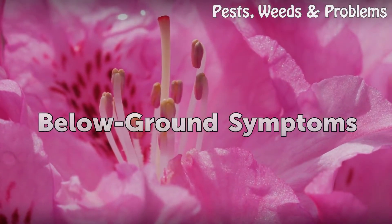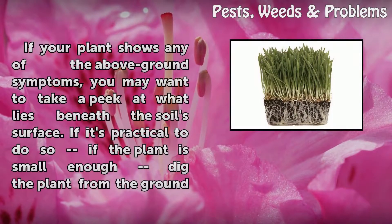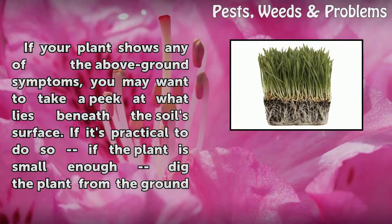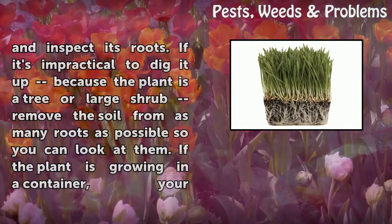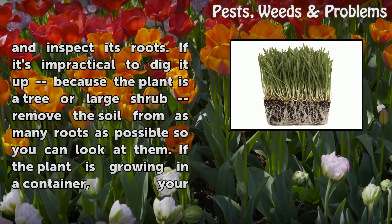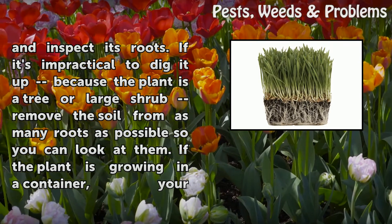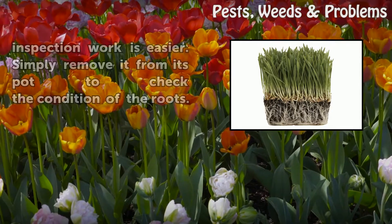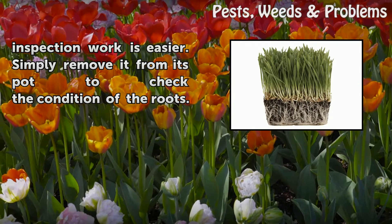Below-ground symptoms: if your plant shows any of the above-ground symptoms, you may want to take a peek at what lies beneath the soil surface if it's practical to do so. If the plant is small enough, dig the plant from the ground and inspect its roots. If it's impractical to dig it up because the plant is a tree or large shrub, remove the soil from as many roots as possible so you can look at them. If the plant is growing in a container, your inspection work is easier — simply remove it from its pot to check the condition of the roots.